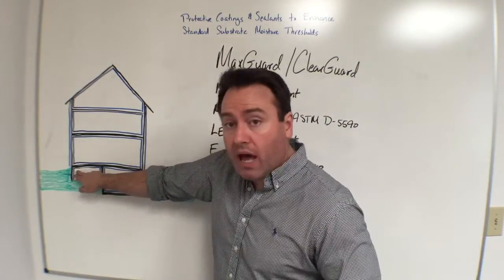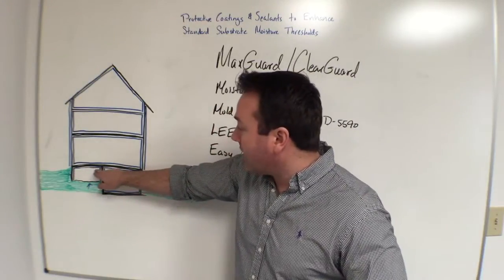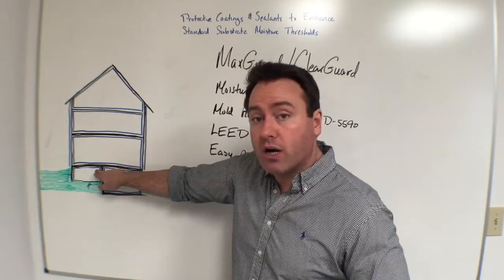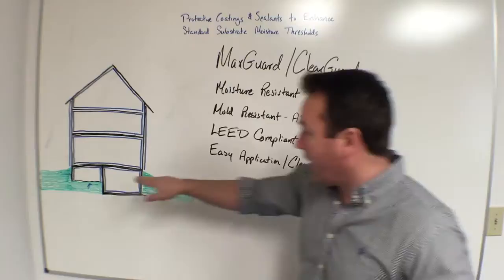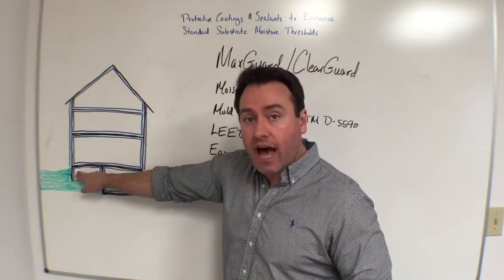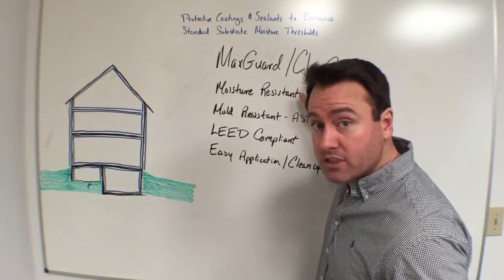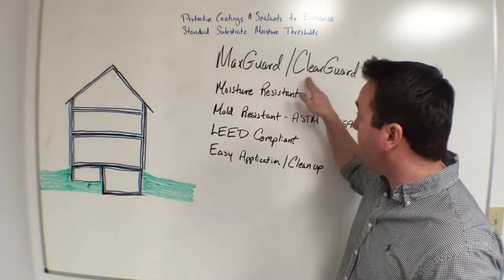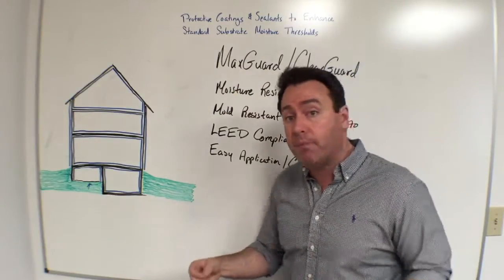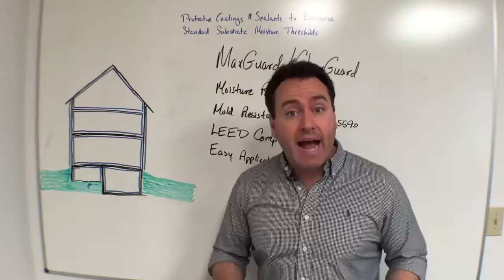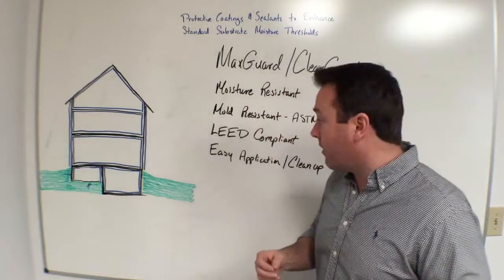What we do is apply either MaxGuard or ClearGuard to the entire substructure of the building, and then we get moisture resistance. We can actually have condensation form on top of the coating film — be that MaxGuard or ClearGuard, depending upon your preference. This is a preference-driven type of application. MaxGuard, being opaque white, gives a bright white appearance, while ClearGuard provides a completely natural appearance that doesn't look plasticky at all, which is really important to a number of our customers.